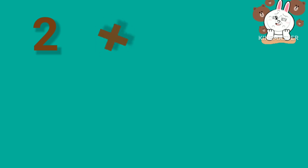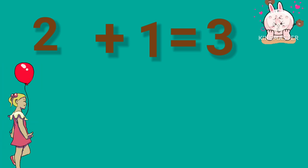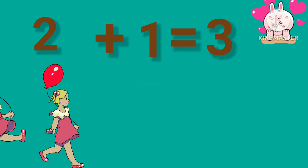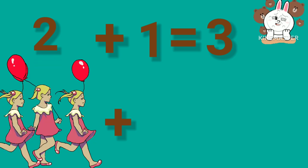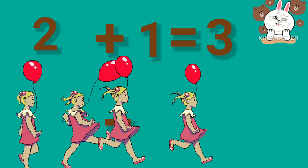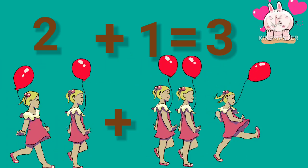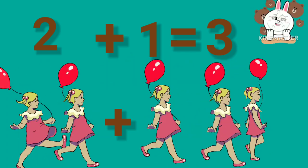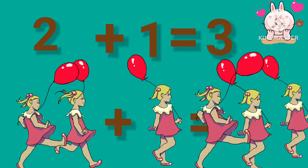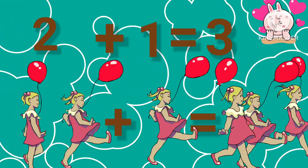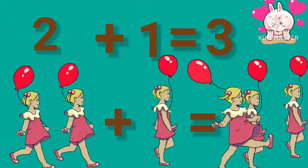Dear students, 2 plus 1. 2 plus 1 is equal to 3. 2 girls plus 1 girl is equal to 3 girls.